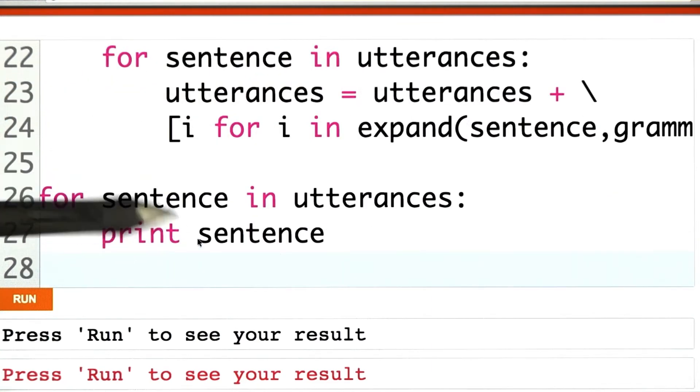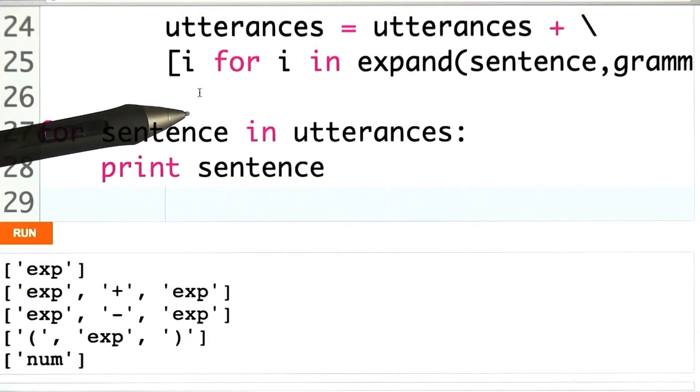And then at the end of the day we print them all out. So if you do it correctly, this is the output you expect to see. Our original sentence, but then it's been expanded with four more. Expression plus expression, expression minus expression, open expression close, and num.